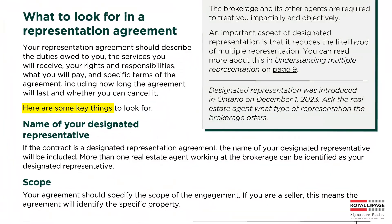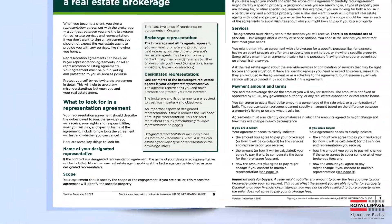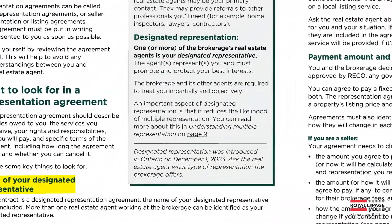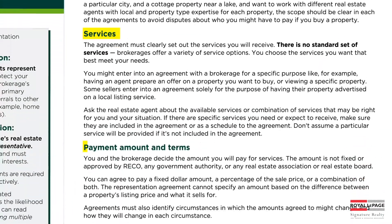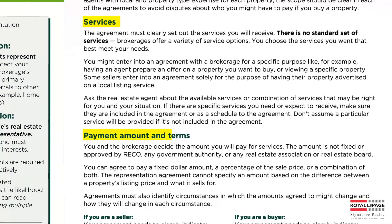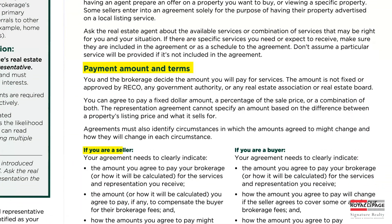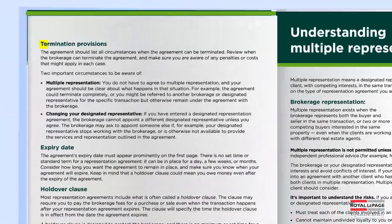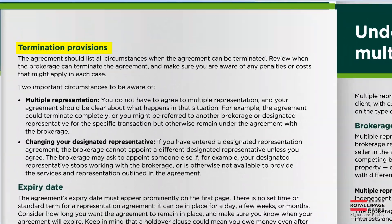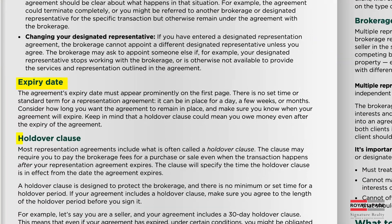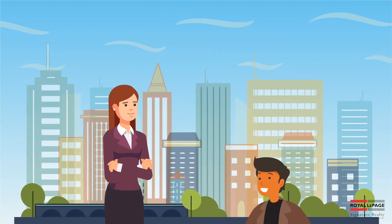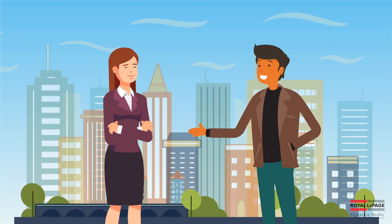Here are some things you should look for: the name of your designated representative, the scope of your agreement, the services you will receive, payment amount and terms, and how this differs if you are a seller or if you are a buyer, any termination provisions, expiry date of the agreement, and any holdover clause. After reviewing your agreement, if you have any questions, be sure to consult with your real estate agent.